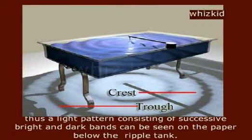Thus, a light pattern consisting of successive bright and dark bands can be seen on the paper below the ripple tank.